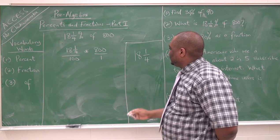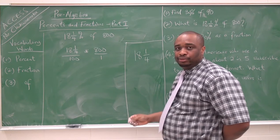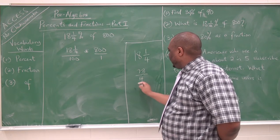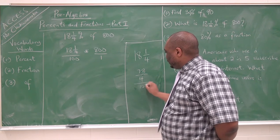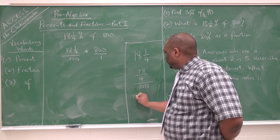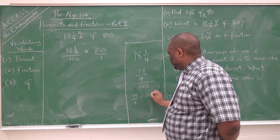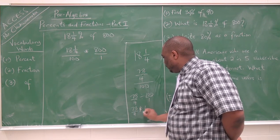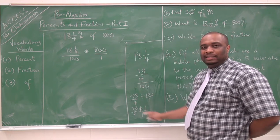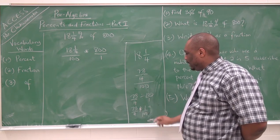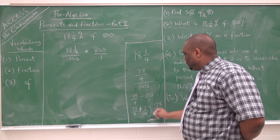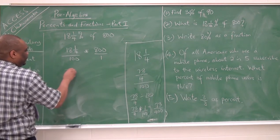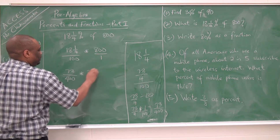We have 18 and 1/4. To convert: 4 times 18 gives us 72, and 72 plus 1 gives us 73 over 4. Now when we do 73 over 4 divided by 100, this gives us 73 over 4 divided by 100 over 1, which equals 73 over 4 times 1 over 100. We cannot simplify further, so this gives us 73 over 400. Then we have 73 over 400 times 800 over 1.